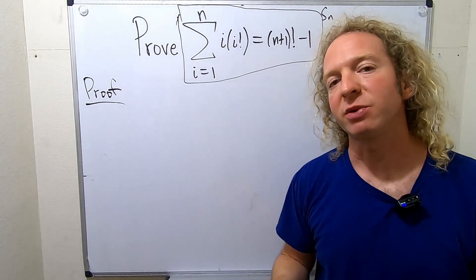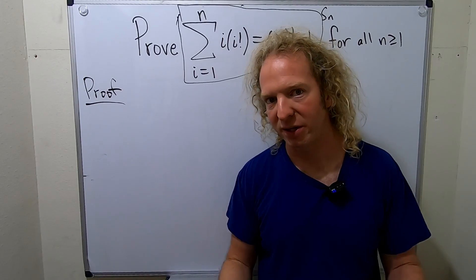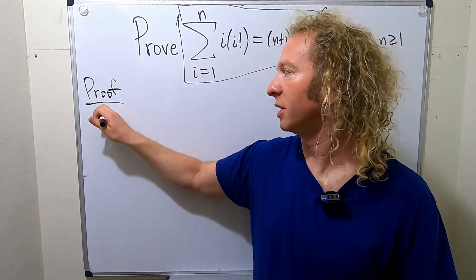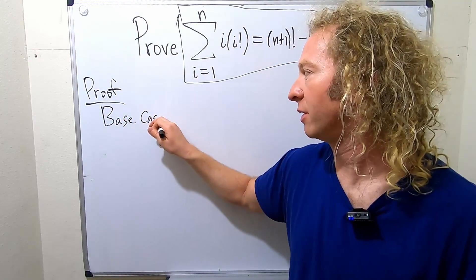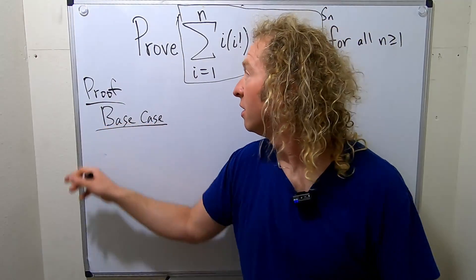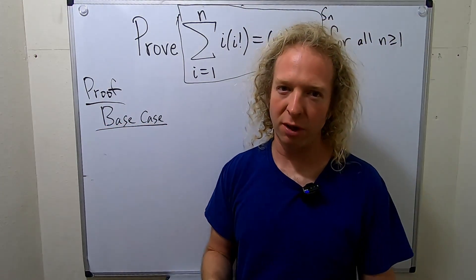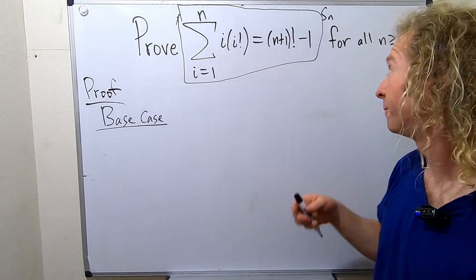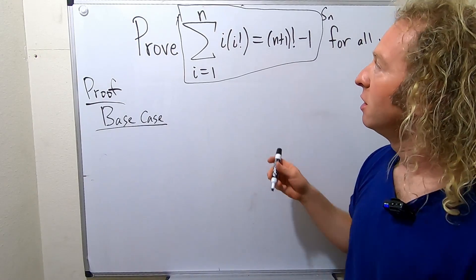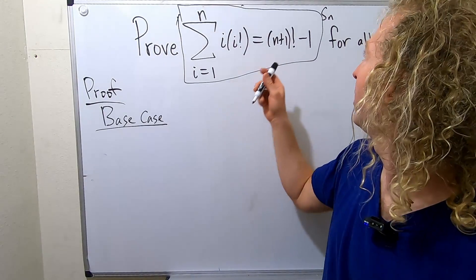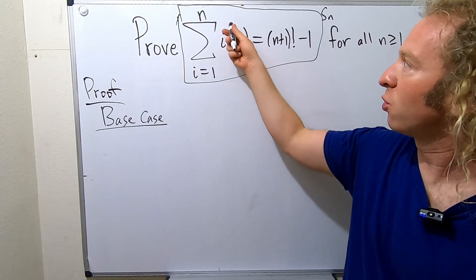I like to do my induction proofs in steps. First you have a base case. So we'll start with the base case. The base case starts at the smallest positive integer that you're trying to prove your statement for. In this case that would be 1. So to show that S sub n is true when n is equal to 1.